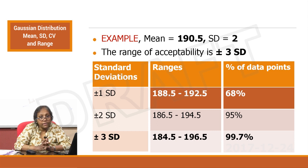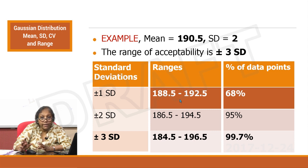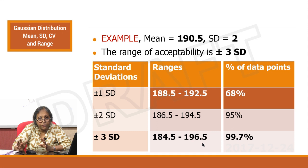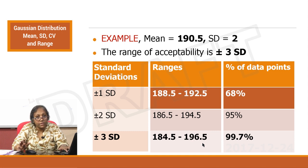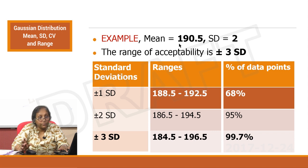It is extremely important that the ranges are set as per the 68-95-99 rule. The ±3 SD range of 184 to 196 — all runs falling within that range will be acceptable for this mean of 190.5 and standard deviation of 2.